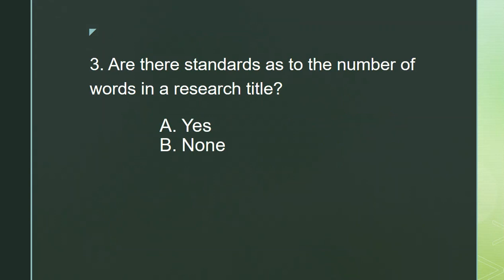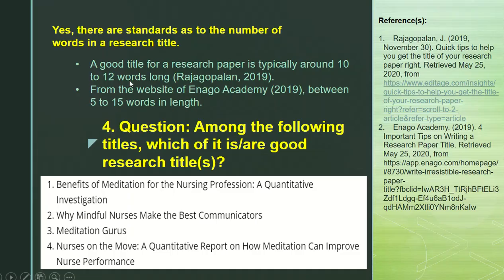Are there standards as to the number of words in a research title? Yes, there are. A good title for a research paper is typically around 10 to 12 words long according to Raghupalan 2019. From the website of Enago Academy 2019, it is between 5 to 15 words in length. The number of words may differ depending on the cited author; however, most lie between 5 to 15 words.